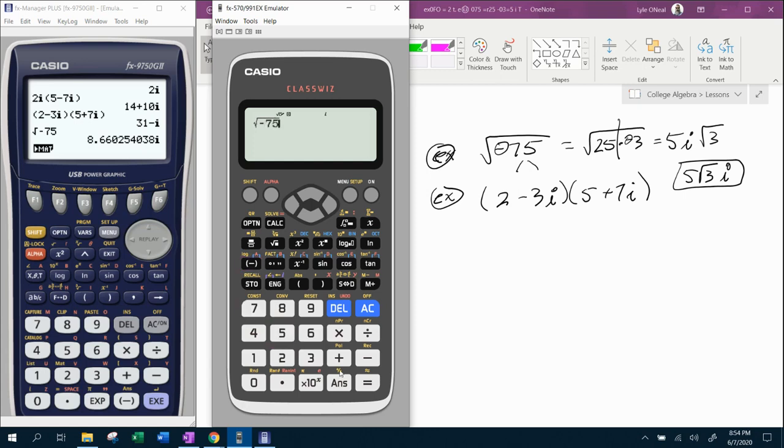5 square root of 3i. This particular calculator, the Casio FX991EX class whiz, writes that complex number in simplest radical form where the FX9750G2 doesn't have that capability. That's just another reason why I prefer the class whiz over even these calculators that are graphing models. This is just a nice calculator. Man, so much stuff to go over just for a simple question here.